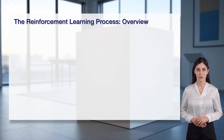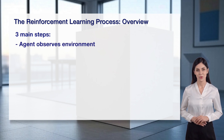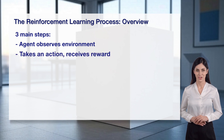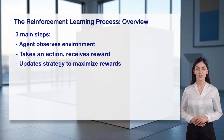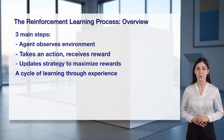The reinforcement learning process follows three main steps, forming a cycle of learning through experience. First, the agent observes the environment to understand its current state. Then, it takes an action and receives a reward or penalty based on that action. Next, the agent updates its strategy to maximize future rewards. This cycle repeats, allowing the agent to improve over time — it's a dynamic process of learning by doing.